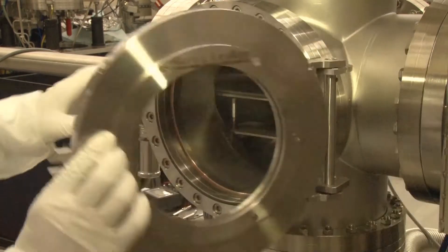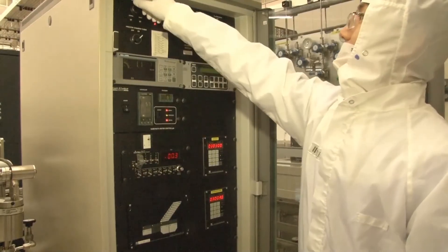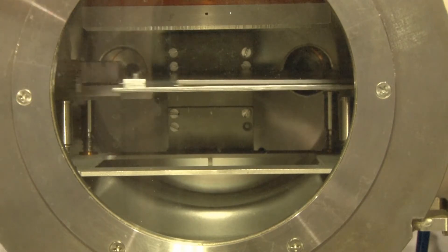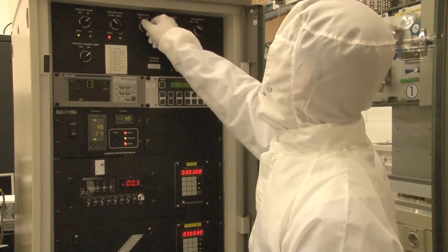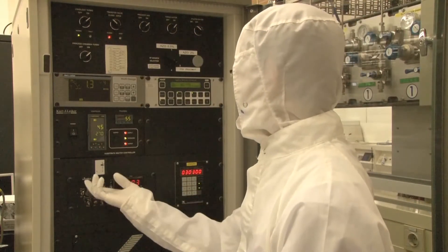The substrate is mounted on a sample holder and put into a load lock. A load lock is a chamber which the substrate is brought under low pressure before it is moved into the processing chamber. This avoids the processing chamber to be contaminated with various unwelcome atoms and molecules present in ambient air.